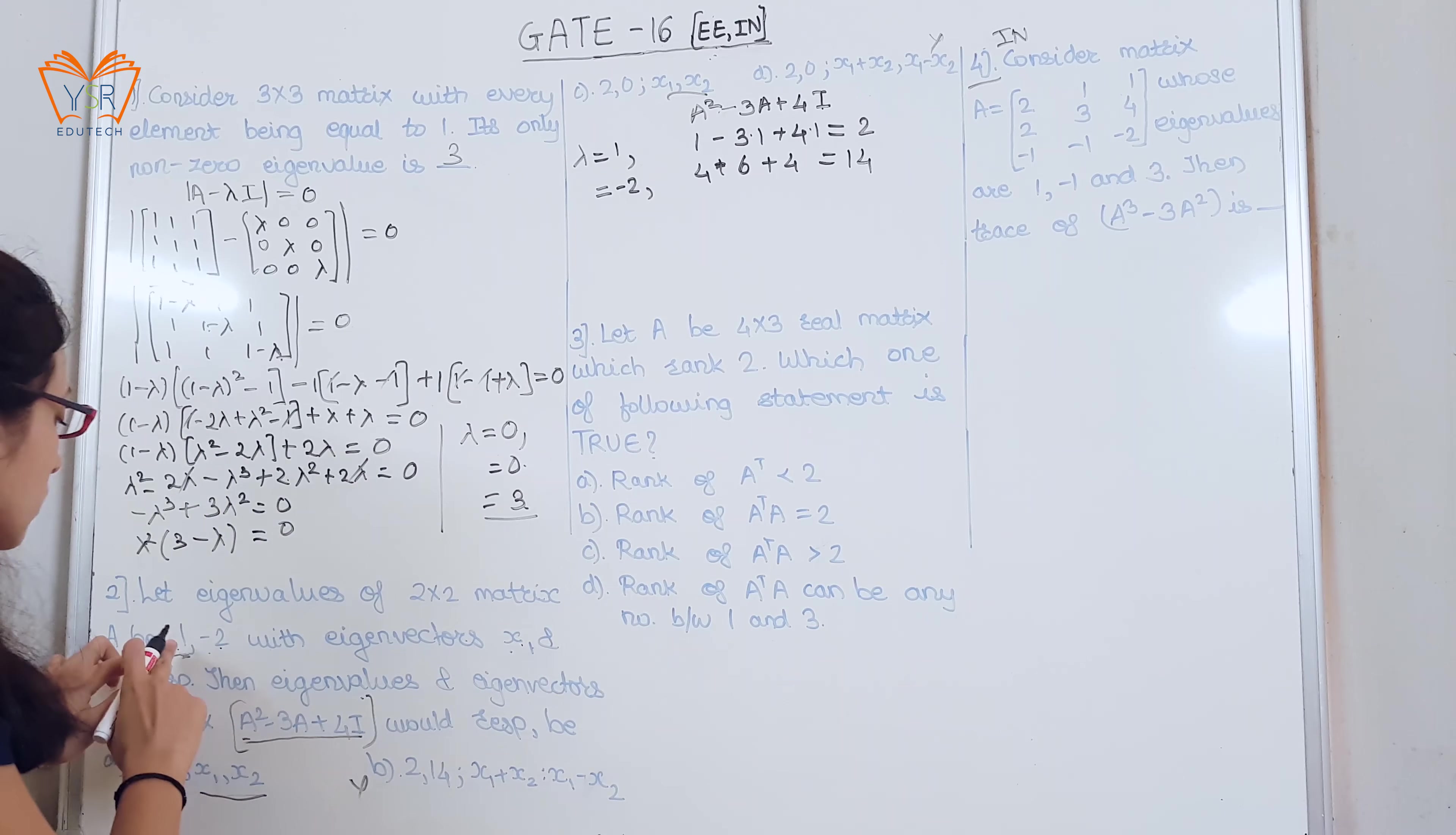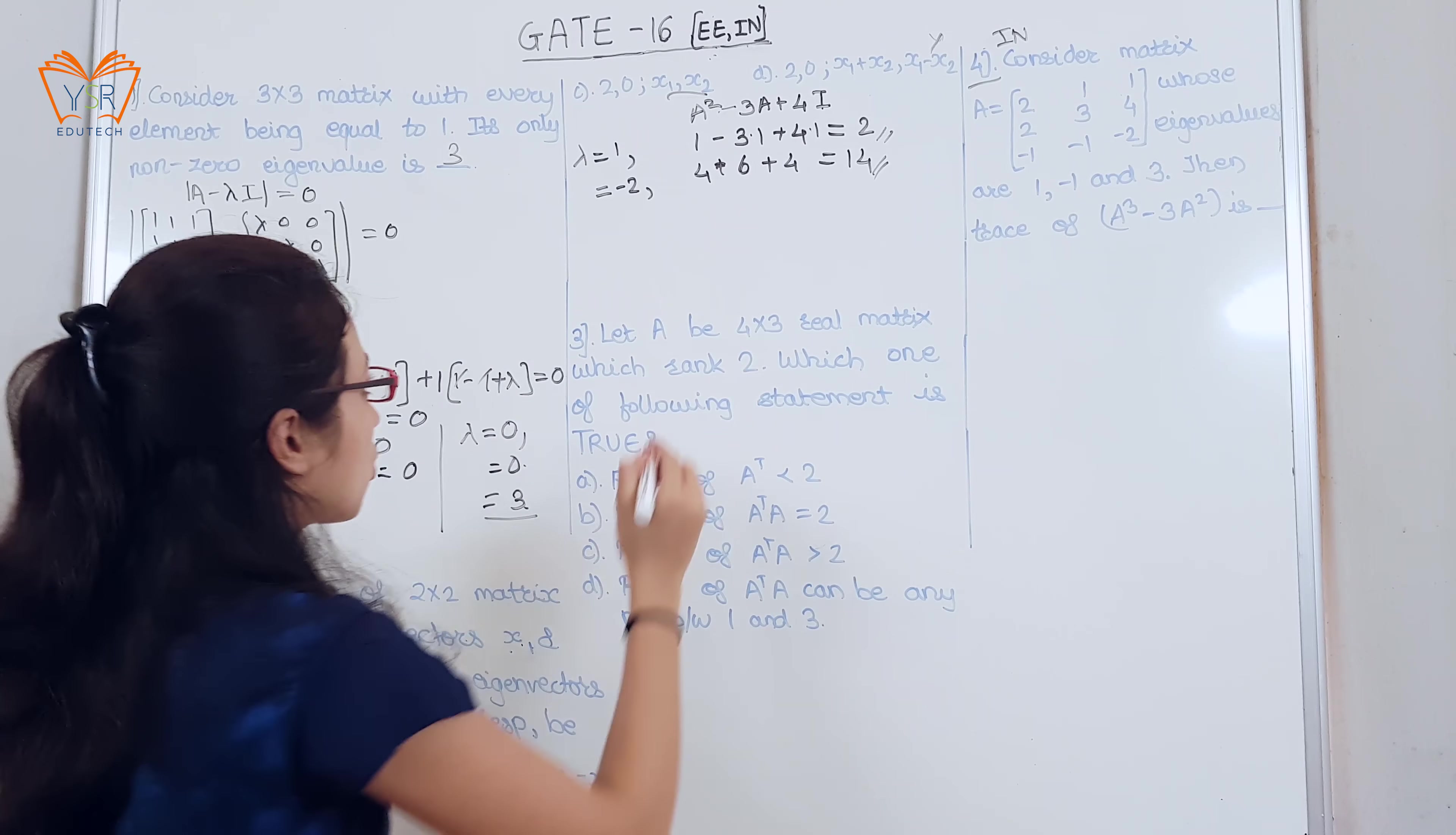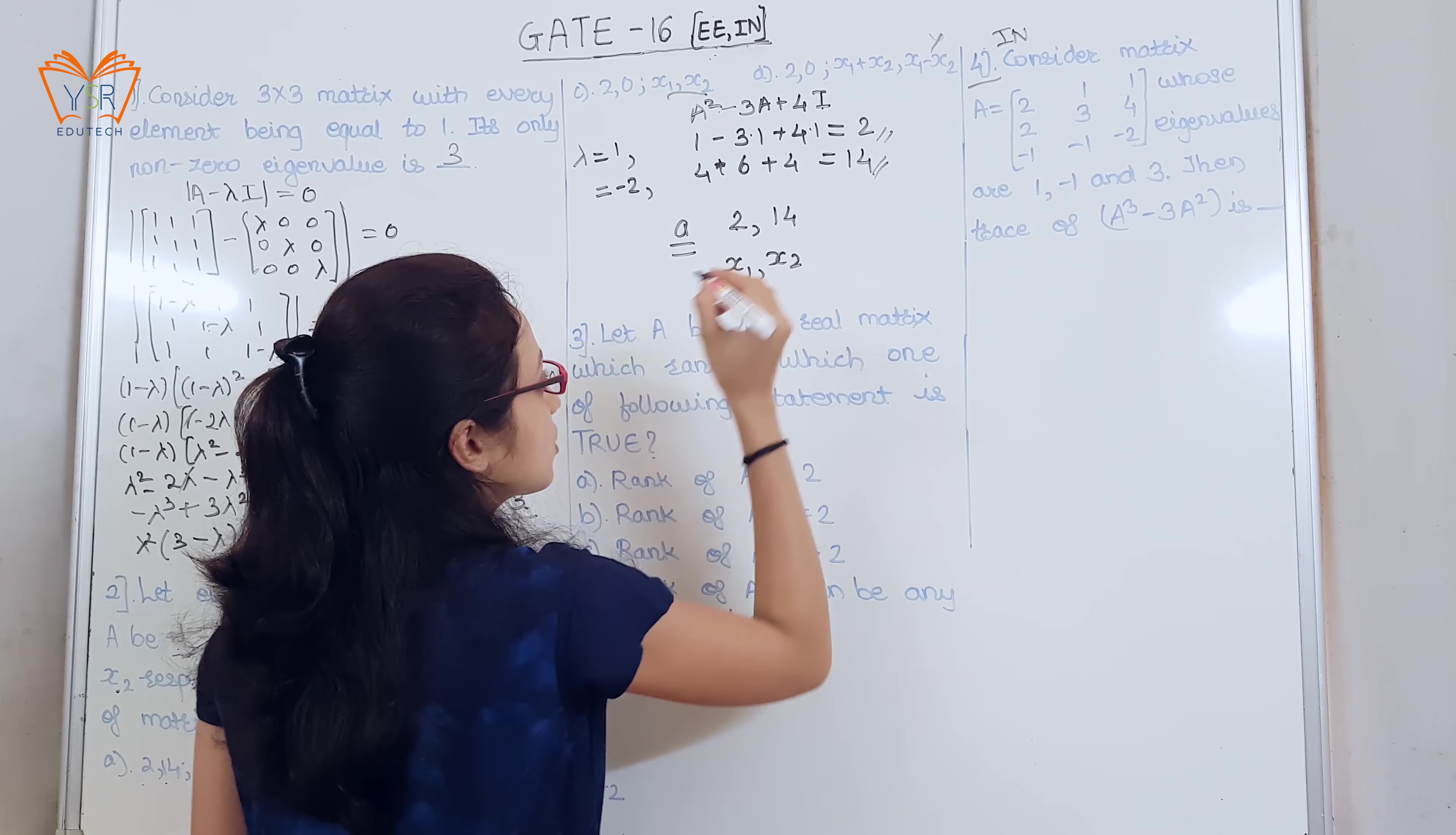So, for eigenvalues 1 and minus 2 for this matrix we are getting 2 and 14 that is option A. Two eigenvalues 2, 14, eigenvectors x1 and x2.